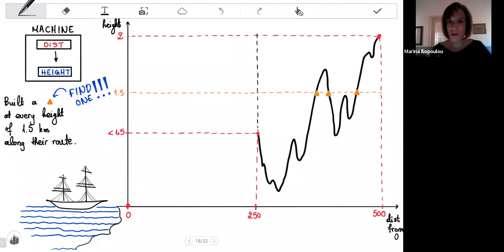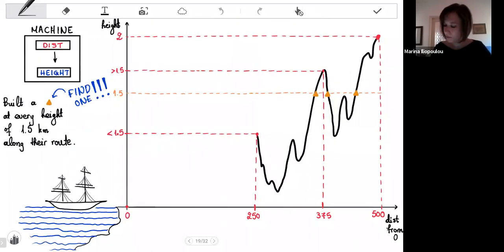Just with one trial in the machine, they wiped out 250 kilometers from their considerations. Now they can keep doing the same thing. They look at this smaller part of the route. They look at the midpoint. It is a distance 375 kilometers from the starting point and the machine tells them that the height over there is above 1.5 kilometers. So they noticed that when they were at the start of this sub route, they were below 1.5 kilometers, and at the middle of it, they were above.